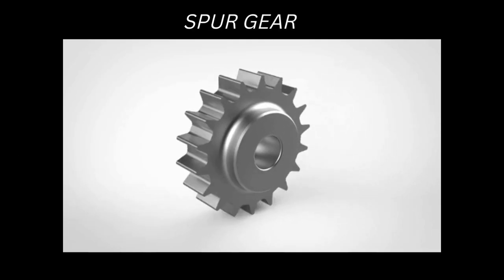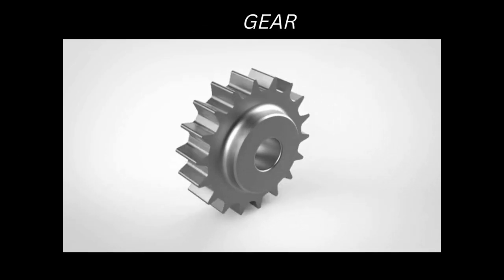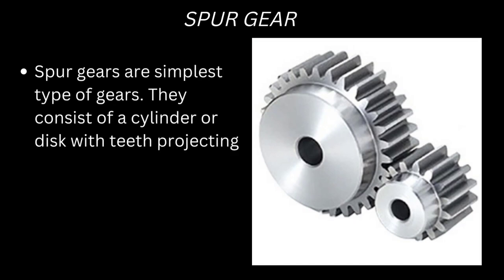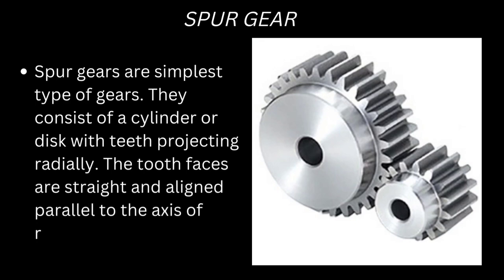Spur gears are the simplest type of gears. They consist of a cylinder or disc with teeth projecting radially. The tooth faces are straight and aligned parallel to the axis of rotation.